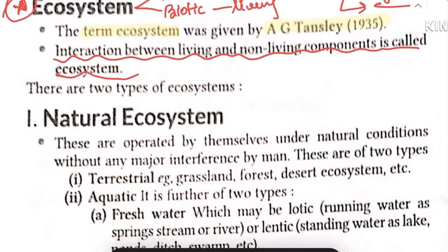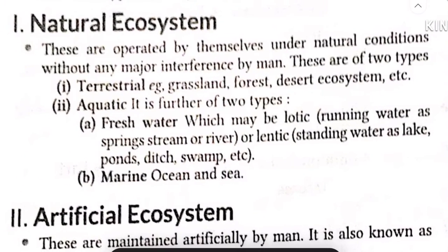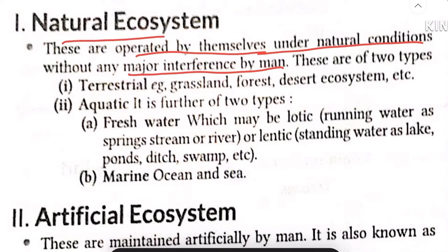Ecosystems are of two types: natural ecosystem and artificial ecosystem. A natural ecosystem operates on its own — there is no human interference; natural conditions prevail. Examples include terrestrial ecosystems such as grassland ecosystem, forest ecosystem, and desert ecosystem, as well as aquatic ecosystems.